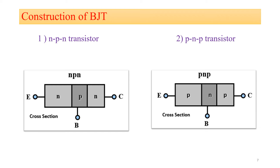The second type is your PNP transistor. In the PNP transistor, N-type semiconductor material is sandwiched between two P-type semiconductor materials, with three terminals: emitter, base, and collector. There are two junctions: the base-emitter junction and the collector-base junction. For PNP transistors, the doping level is the same as NPN: emitter is always heavily doped, base is always lightly doped, and collector is always moderately doped.